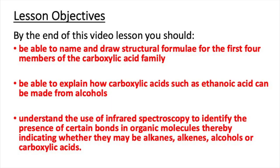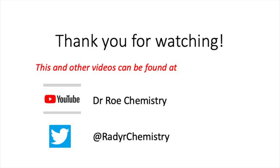That concludes our video lesson. After watching this video you should now be able to name and draw structural formulae for the first four members of the carboxylic acid family, explain how carboxylic acids such as ethanoic acid can be made from alcohols, and understand the use of infrared spectroscopy to identify the presence of certain bonds in organic molecules, thereby indicating whether they may be alkanes, alkenes, alcohols or carboxylic acids. Please check out our YouTube channel Dr O Chemistry and our Twitter site at Radachemistry.